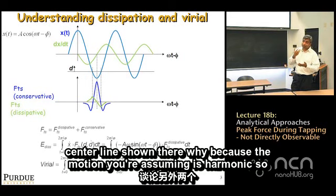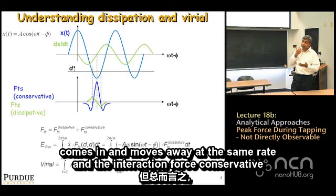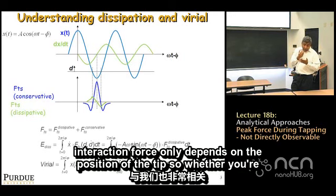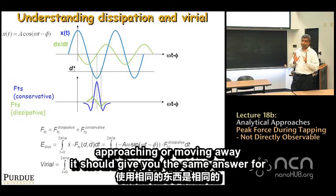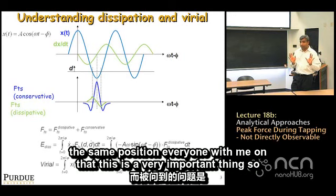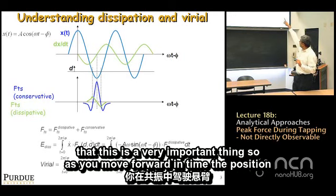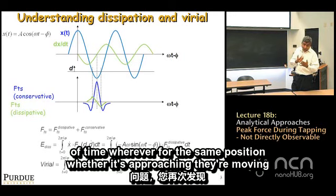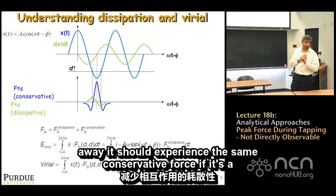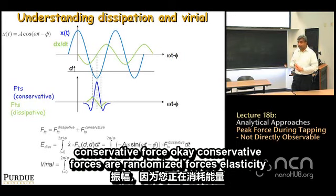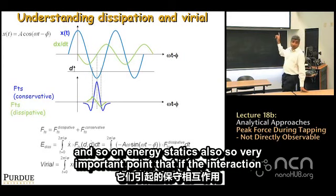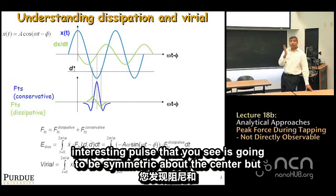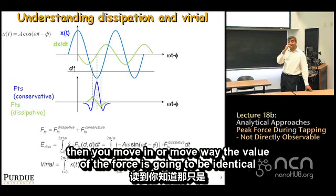The conservative force history is symmetric because the tip motion is harmonic — it comes in and moves away at the same rate. Conservative forces depend only on position, so for the same tip position, whether approaching or retracting, the force is identical. Conservative forces include van der Waals, elasticity, and electrostatics.